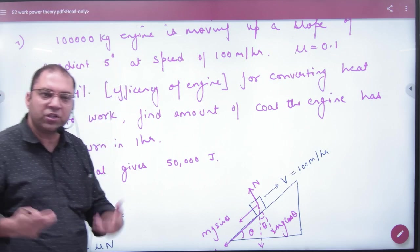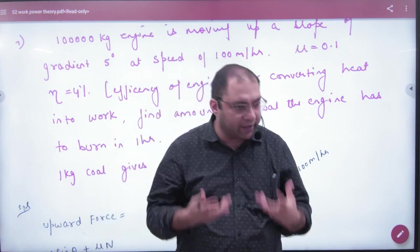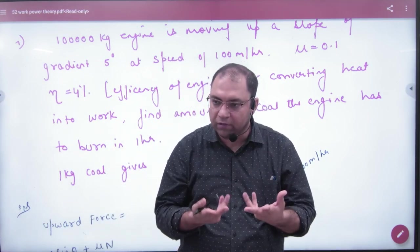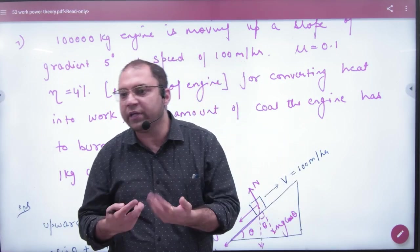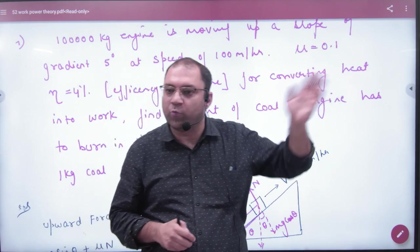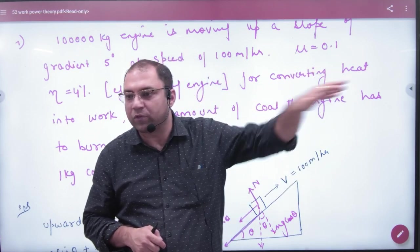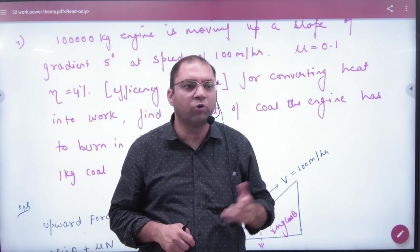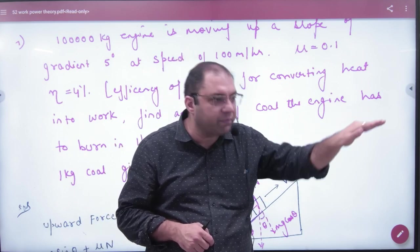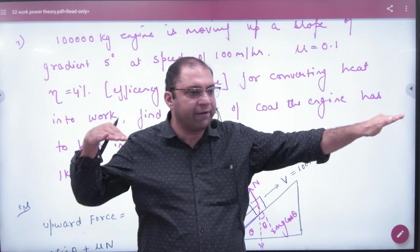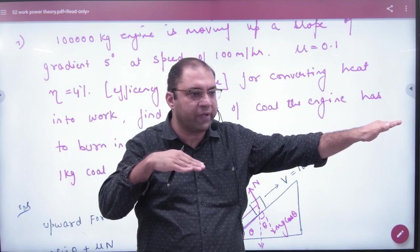The input energy comes from burning coal. The engine is climbing upward, doing work by causing displacement. So the input is energy from coal, and the output is the work done climbing. This is the key distinction for this problem.